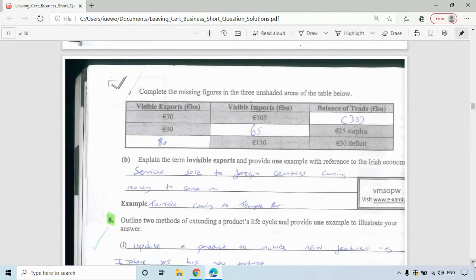Question seven: complete the missing figures in the tree and shaded areas of the table. You're doing these as always: exports minus imports. Balance of trade is visible exports minus visible imports. That's why it's 70 minus 105, which would be a deficit of 35 billion. 90 minus something is 25, so the missing figure will be 65. And something minus 110 gives you the deficit, so that answer would be 80.